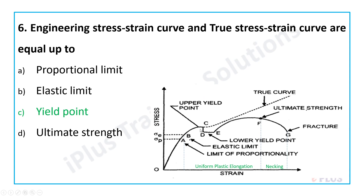Looking at the stress-strain curve, we see engineering stress. But from point C or the upper yield point, there is a dotted line — that dotted line represents the true stress-strain curve. The denominator value is reduced, so the actual stress value will be greater than the theoretical engineering stress value.